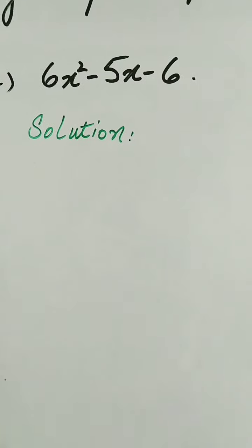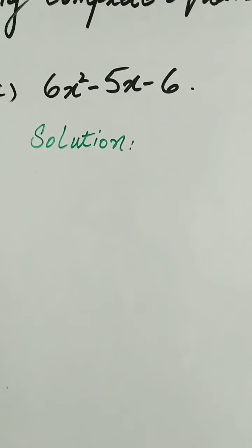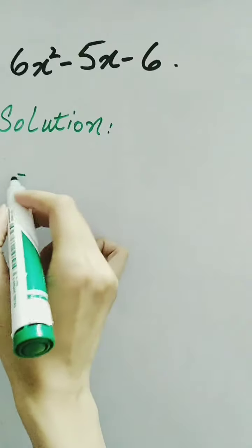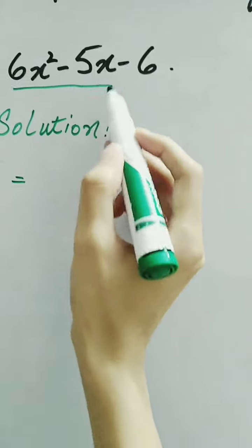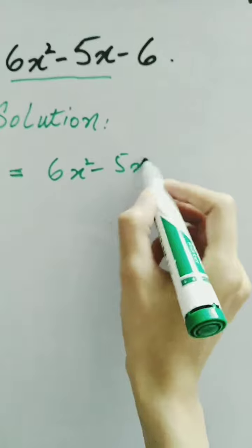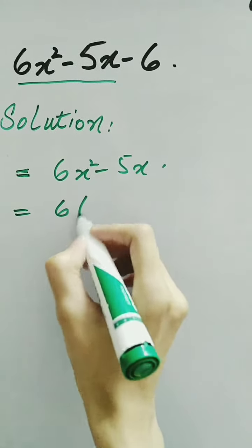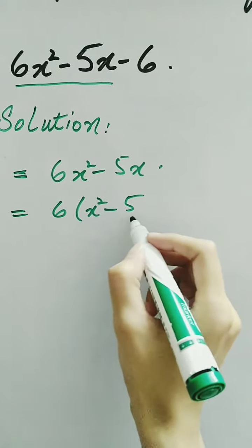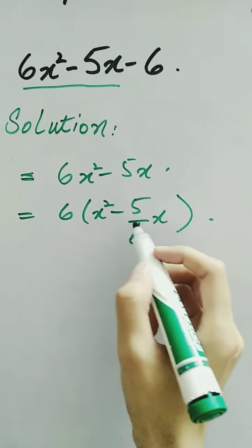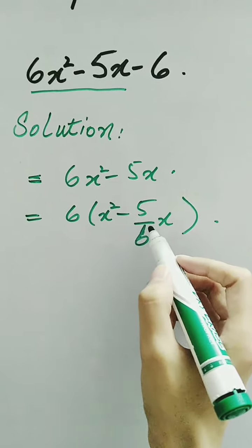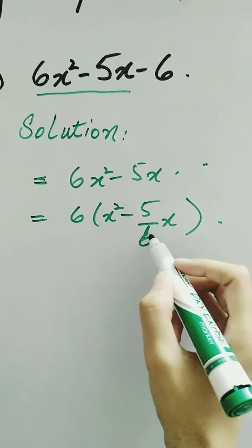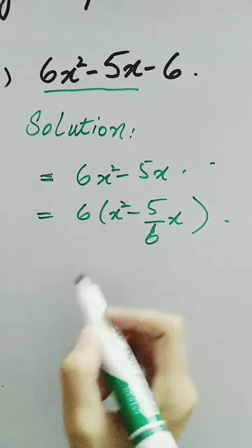Now look at another question: 6x squared minus 5x minus 6. In order to convert it into complete square form, first we need to remove the 6 from x squared. So we take 6 as common from these two terms, since we only need those two terms to convert into complete square form. Taking 6 as common, it becomes 6 times (x squared minus 5 over 6 times x). When 6 multiplies with 5 over 6, the 6 cancels out and we have the same 5x. So we can write it as 5 over 6 times x with 6 taken as common.